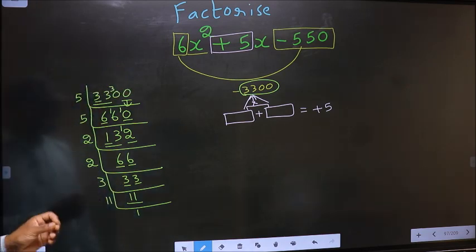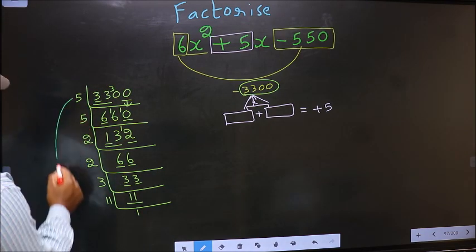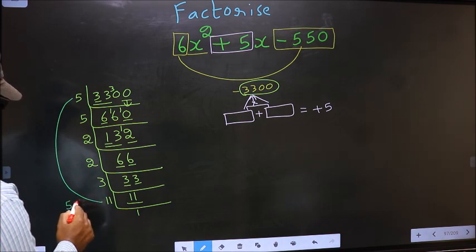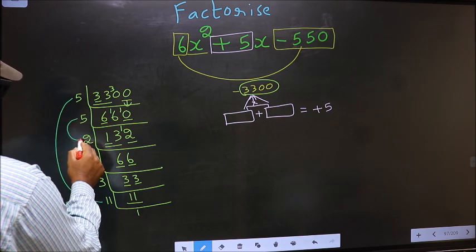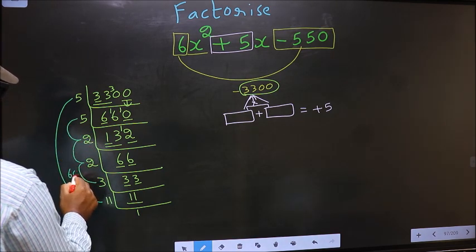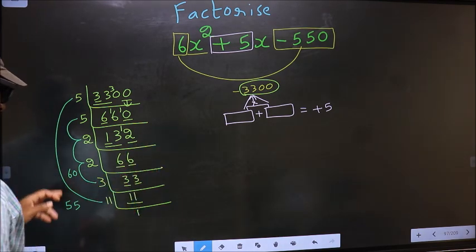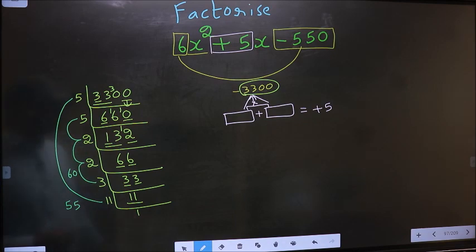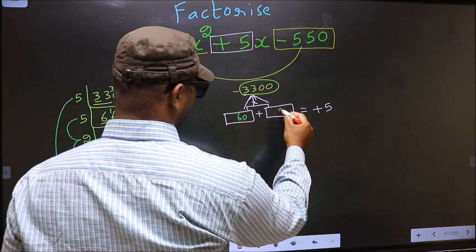Now the 2 numbers should be 5 into 11, 55. And the second number is 5 into 2, 10 into 2, 20 into 3, 60. 60 minus 55, 5. 60 into 55, 3300. So here you write 60 and here 55.